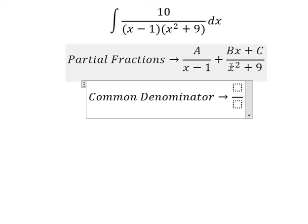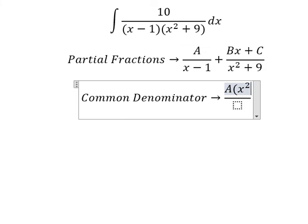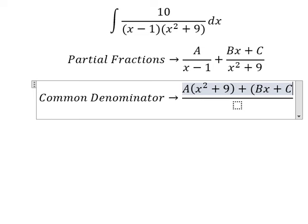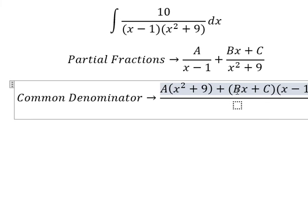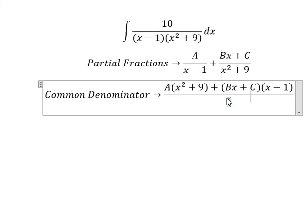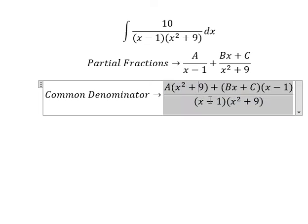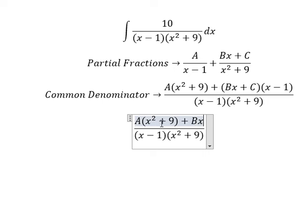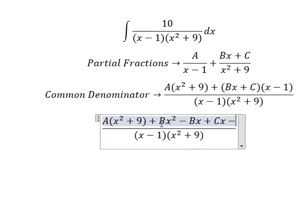So we have A multiplied by (s squared plus 9), and (Bs plus C) multiplied by (s minus 1). Expanding: Bs multiplied by s gives Bs squared, minus Bs, and then we have Cx minus C.